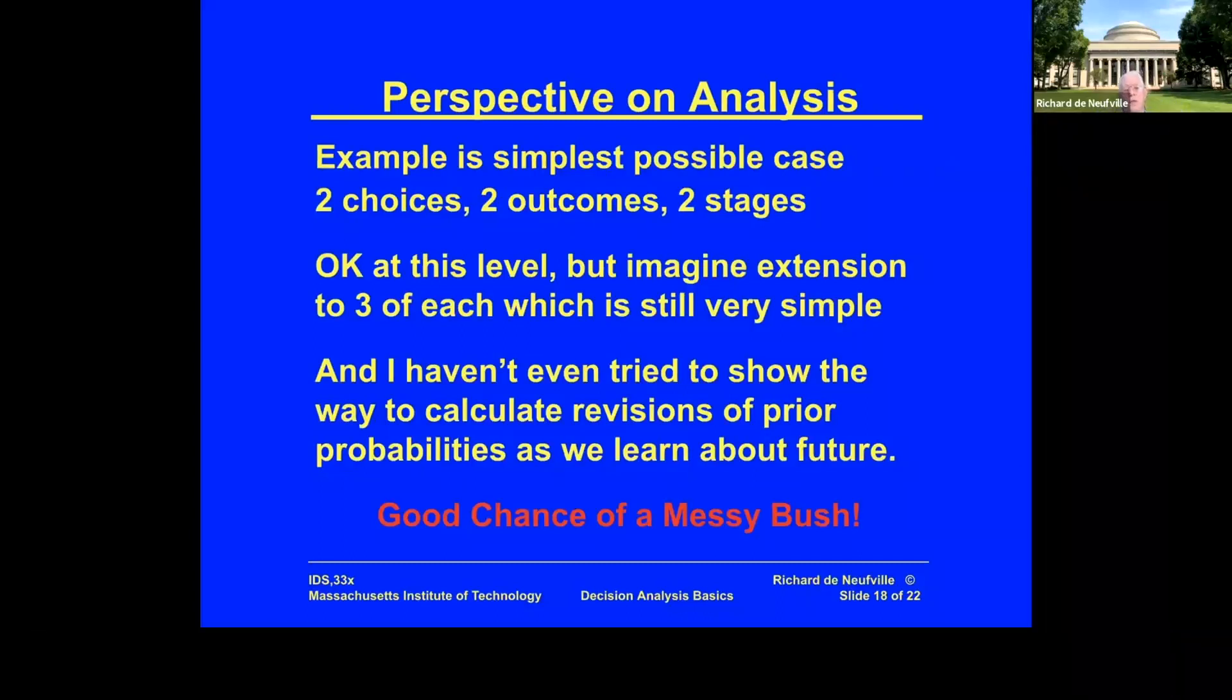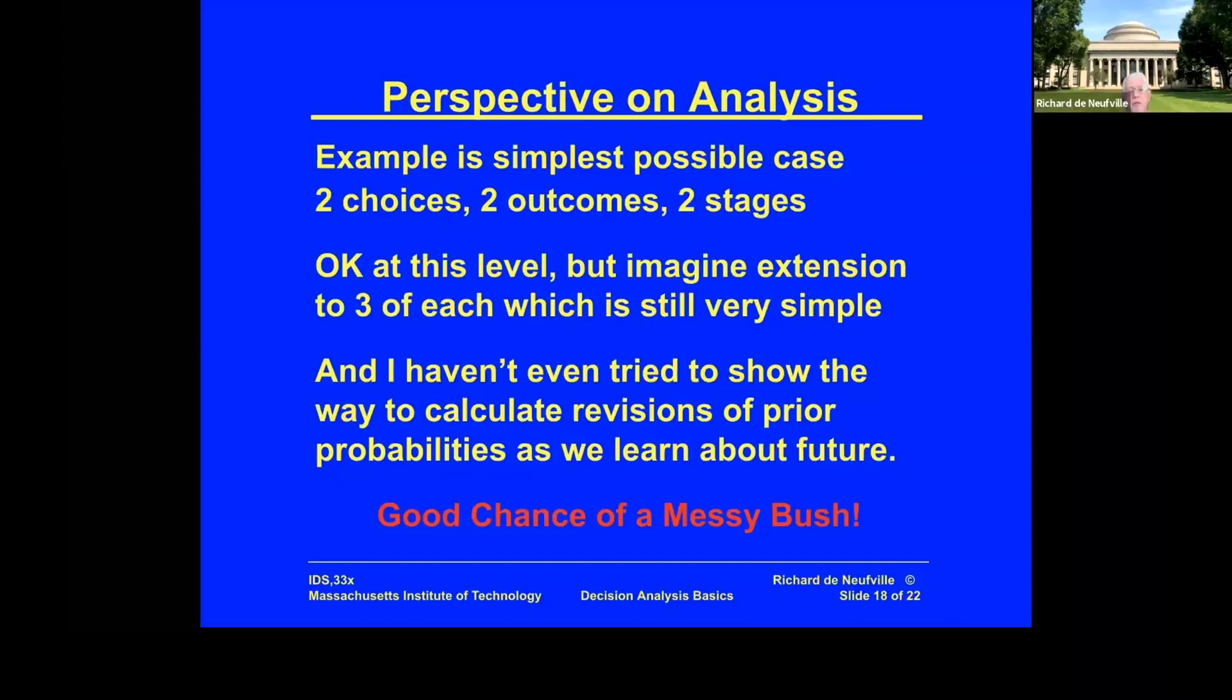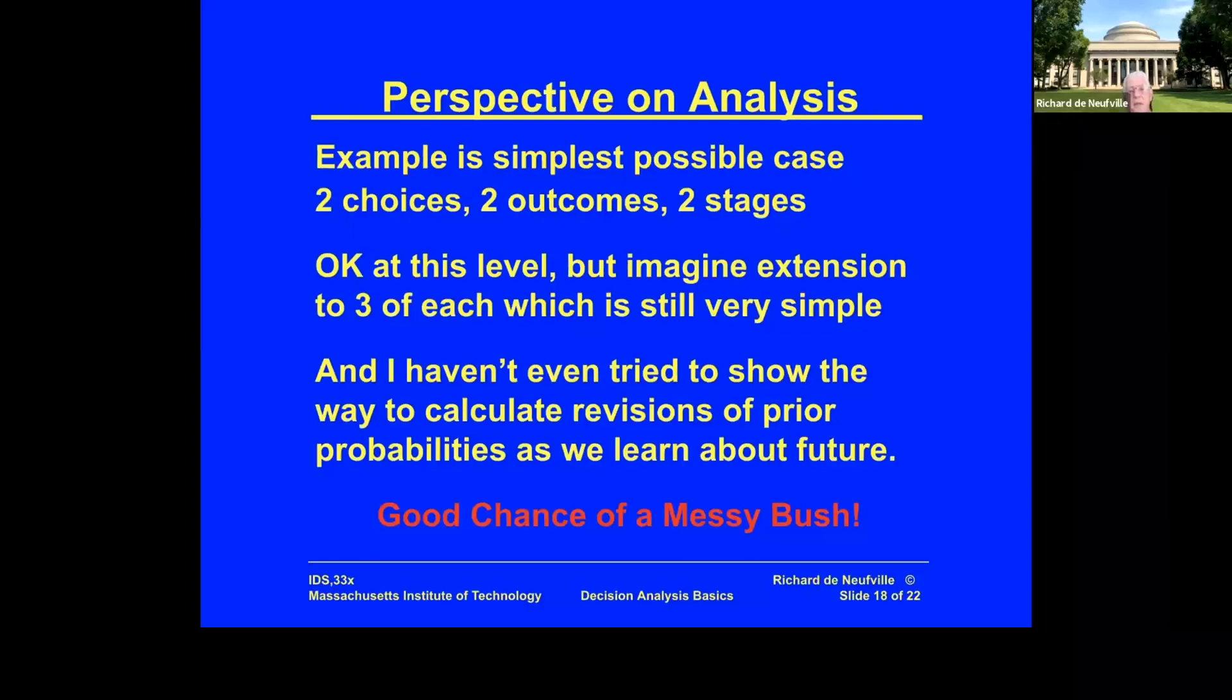Just imagine that instead of two choices, two outcomes, two stages, you have an extension of three of each. You're now talking about a really complicated setup. I haven't deliberately tried to show you the way to calculate the revisions of the prior probabilities.